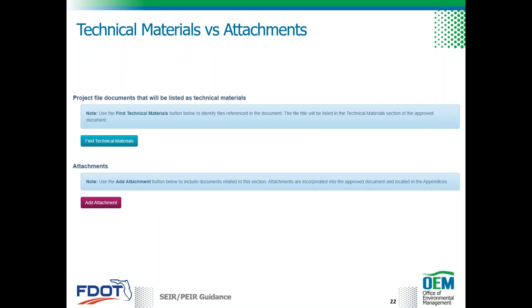Each topic in the form allows you to upload documents as either technical materials or as attachments. Technical materials are documents contained under separate cover, incorporated by reference, referenced in the SEER itself, and included in the project file in SWEPT. This includes technical reports such as a project traffic analysis report, conceptual stage relocation plan, natural resource evaluation, and the preliminary engineering report, as well as technical memorandums. Attachments are included in the appendix and considered part of the SEER document.